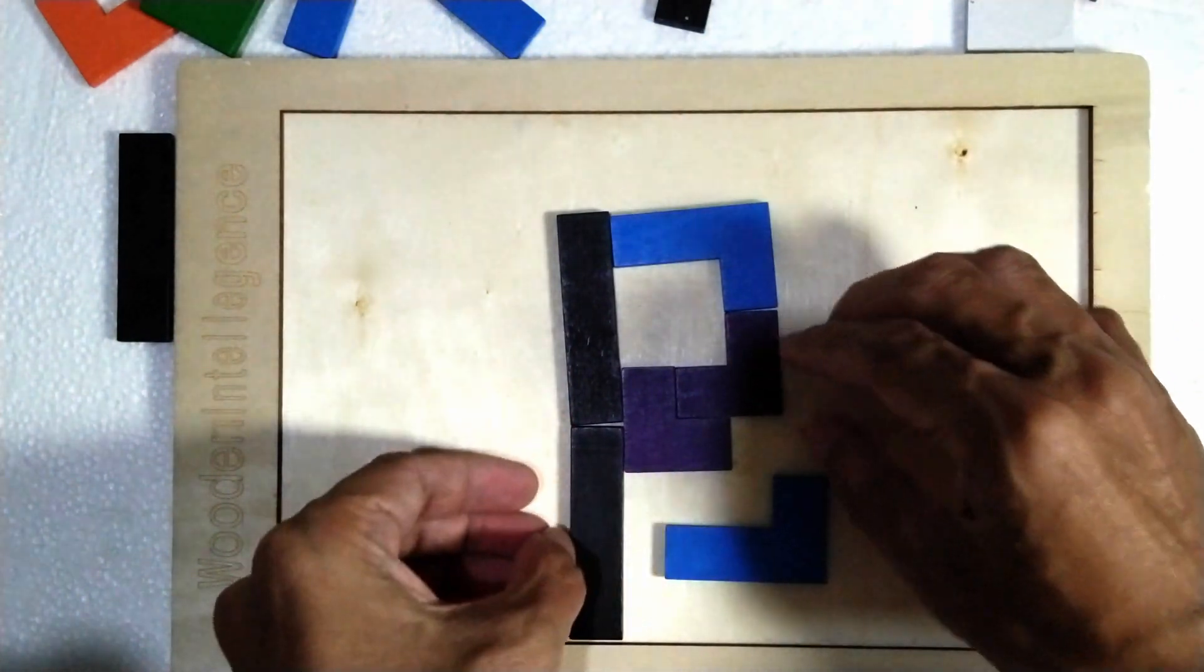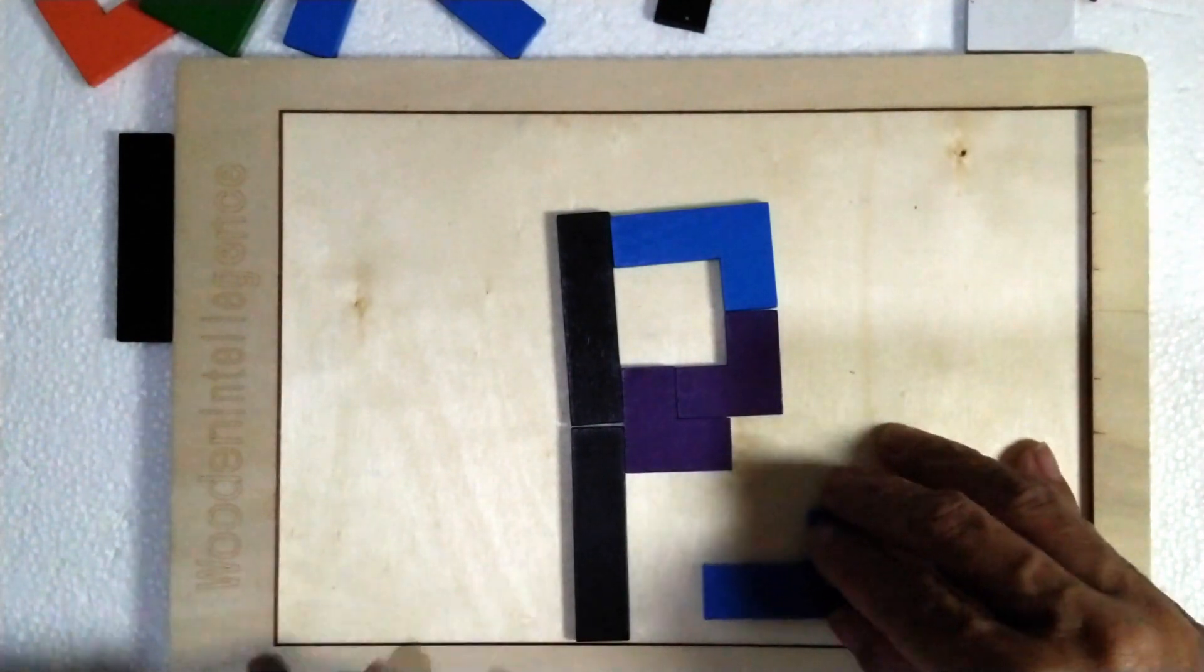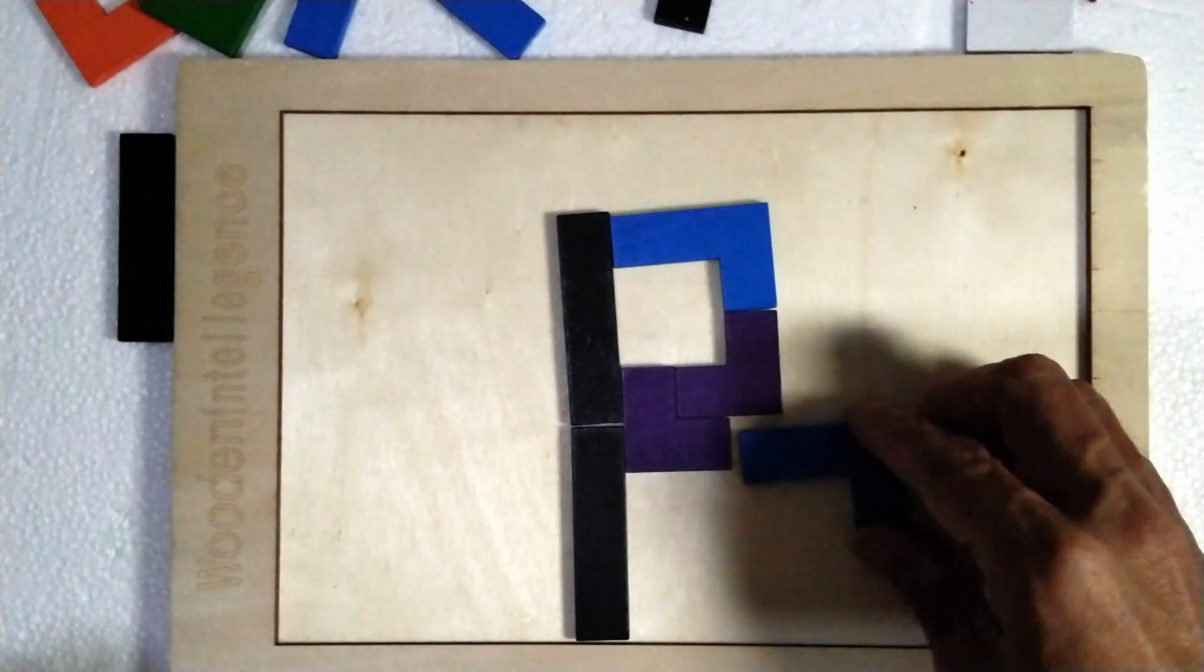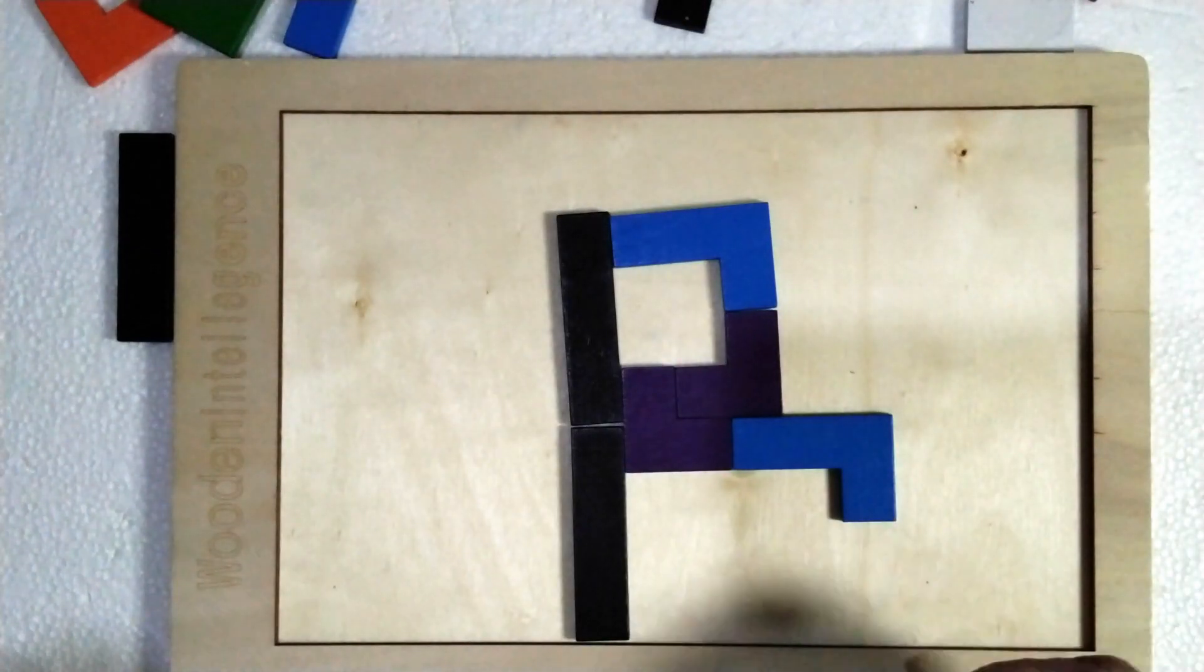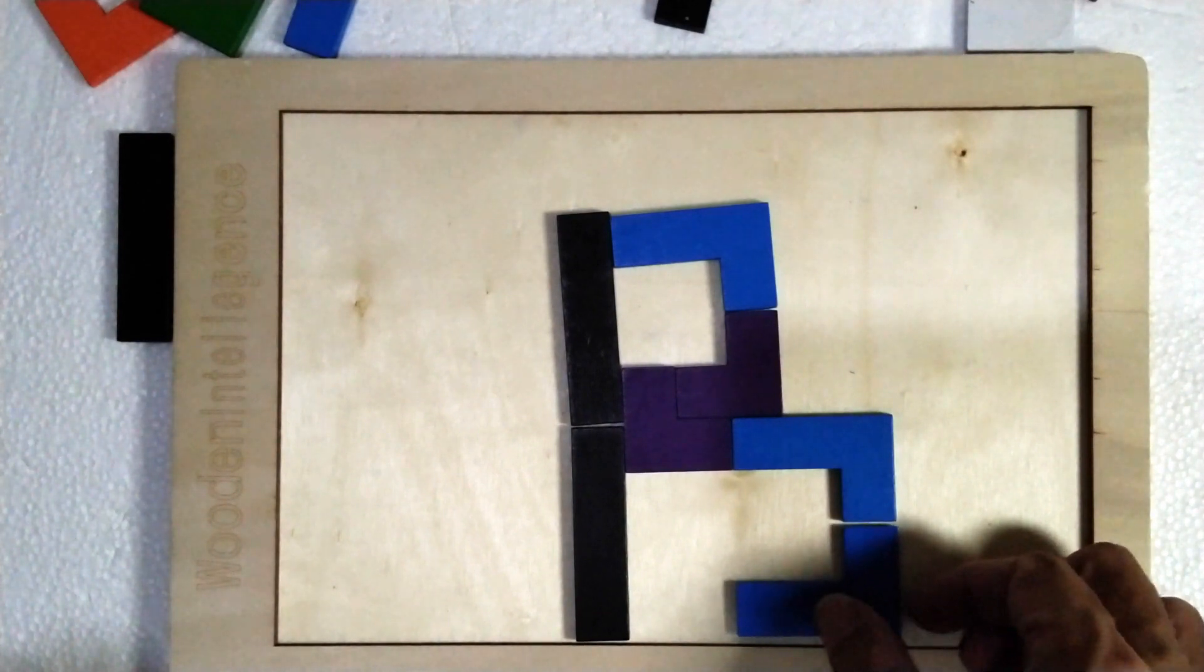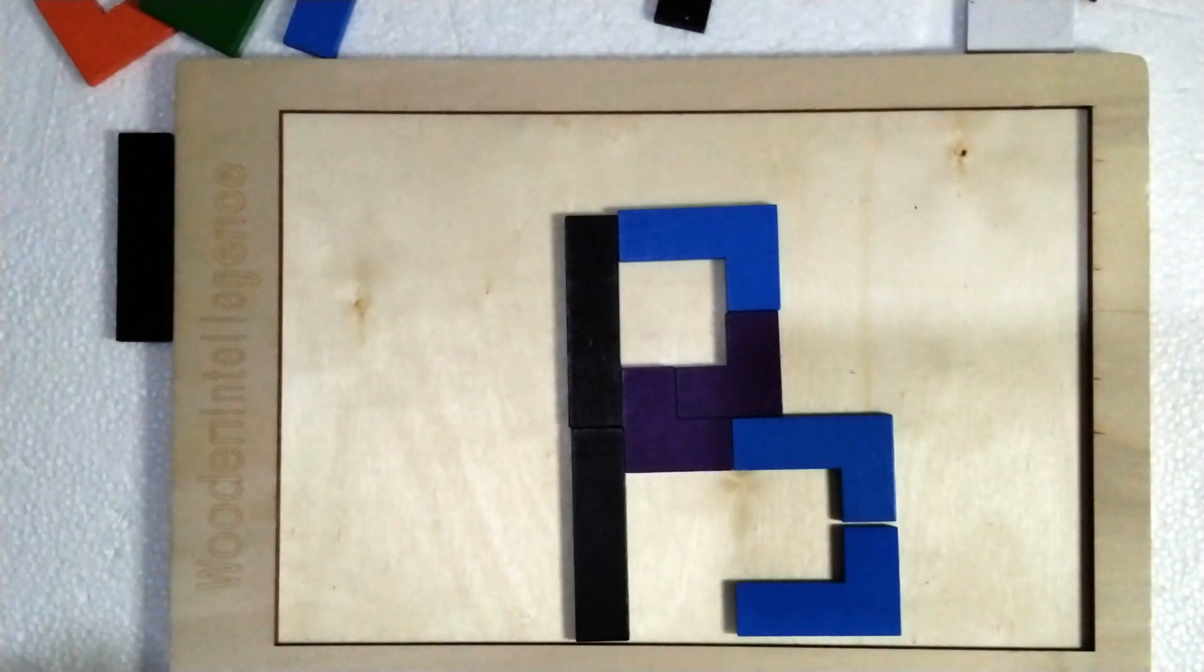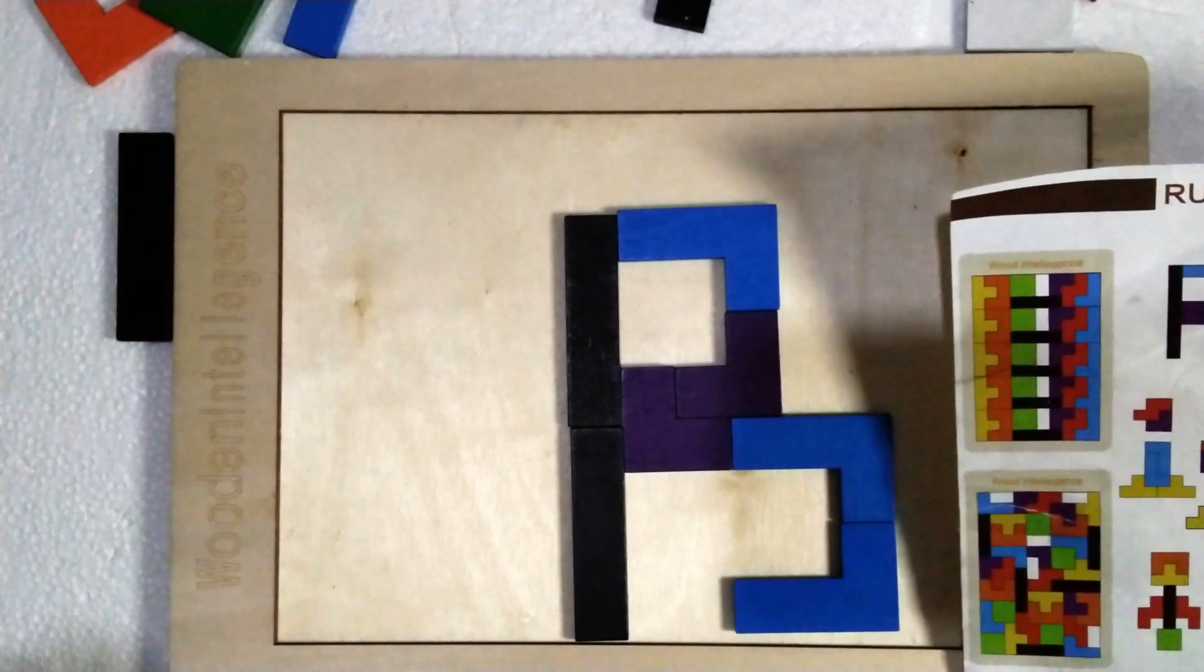Yeah this one as well. Then we can use this one to make the B shape later. You need to have another color model now. Finish it. We can check and compare the shape model on the reference paper here.